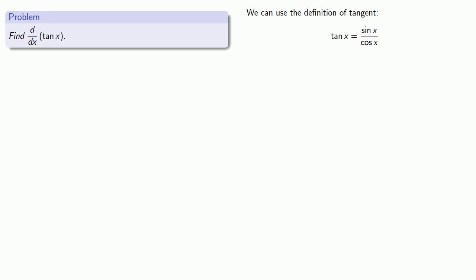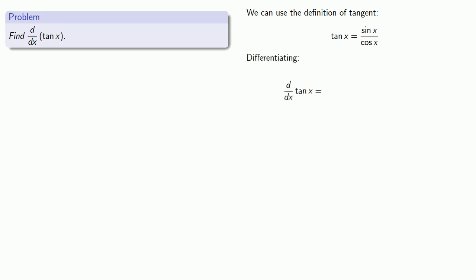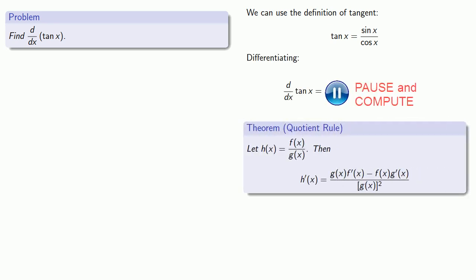Now we can use our definition of tangent as sine over cosine. So when we differentiate, remember that the type of function is determined by the last operation performed. In this case, the last thing we do is divide, so our derivative will begin by using the quotient rule.